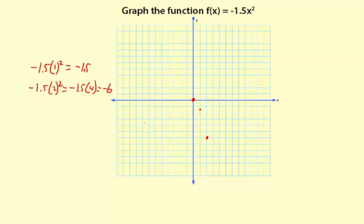Now let's take a look at the next value: -1.5 times 3 squared. That's -1.5 times 9, and that is -13.5. Let's see if that even fits on the graph.